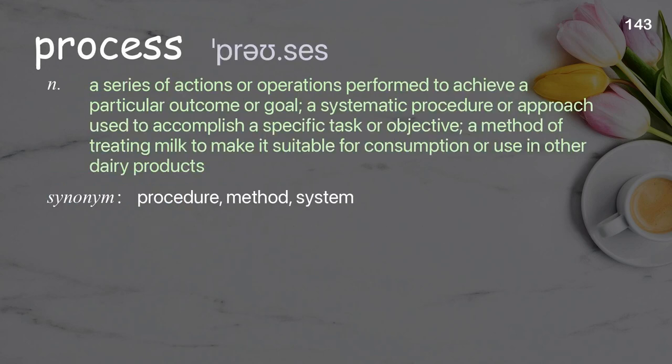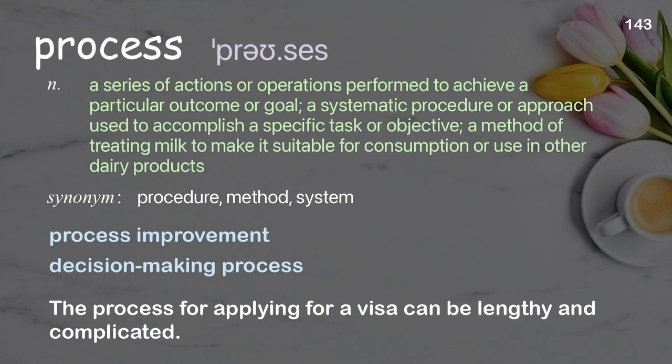Process: a series of actions or operations performed to achieve a particular outcome or goal; a systematic procedure or approach used to accomplish a specific task or objective; a method of treating milk to make it suitable for consumption or use in other dairy products. Examples: process improvement, decision-making process. The process for applying for a visa can be lengthy and complicated.